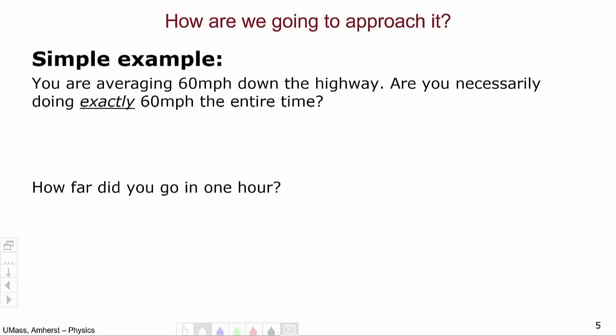So how are we going to approach it? This is best demonstrated by some sort of simple example. So let's say you're averaging 60 miles an hour down the highway. Are you necessarily doing 60 all the time? Well, no, of course not. You might be doing 65 for a while, and then a little bit later 55 for a while. Well, you know, your speedometer is always going up and down. As you go up hills and down hills, you'll speed up and slow down, but it's totally possible that you average 60 miles an hour.